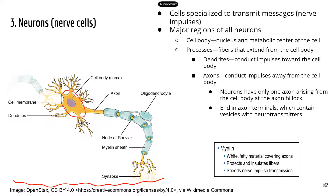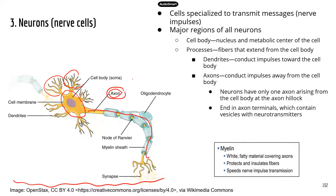This is the cell body. On the cell body, you will see those tree branch-like structures. Those are called dendrites, so neurons use dendrites to receive signals from other neurons. The next structure, which is very important when you talk about muscle control, is called the axon. The axon is like a big tail of the neuron. Sometimes neurons can have very long axons so that they can control muscles that are far away from the brain.